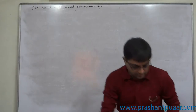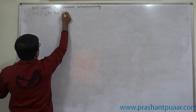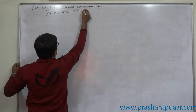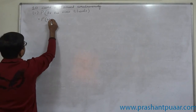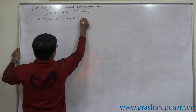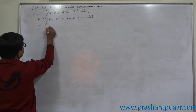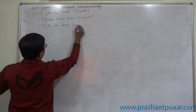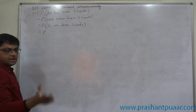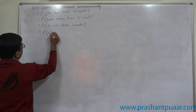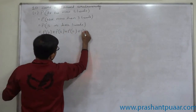Fifth case: probability of at most 3 heads, which means 'not more than 3,' interpreted as 3 or less — that is r = 0, 1, 2, or 3. We calculate P(0) + P(1) + P(2) + P(3).